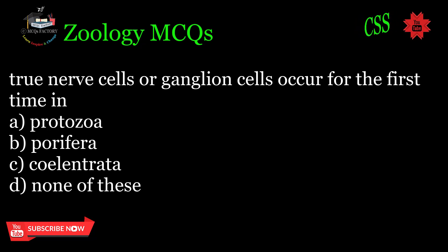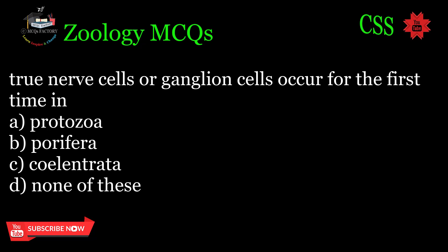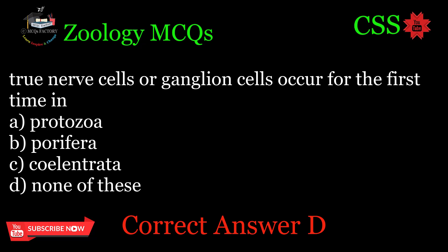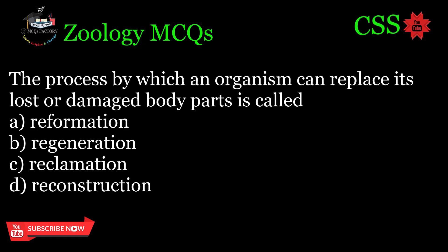True nerve cells or ganglion cells occur for the first time in: A. Protozoa, B. Porifera, C. Coelentrata, D. None of these. Correct answer: D.